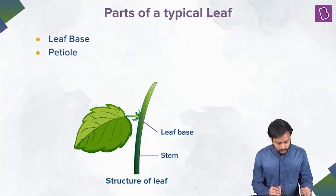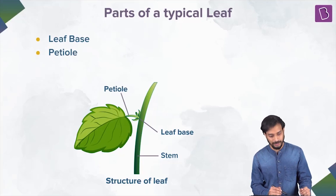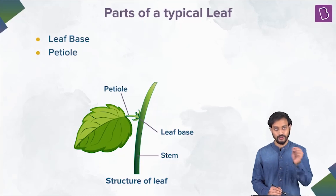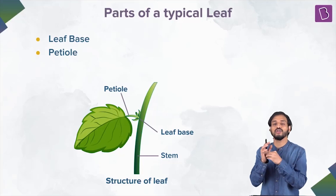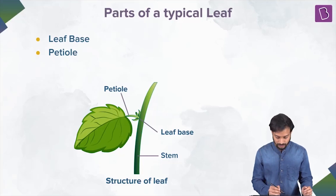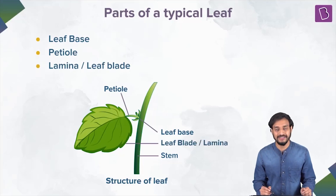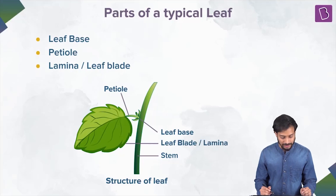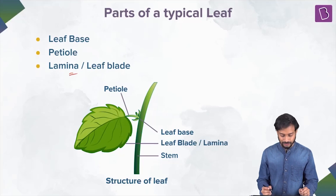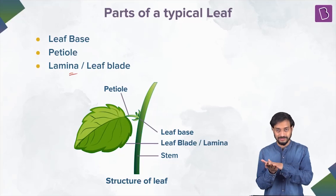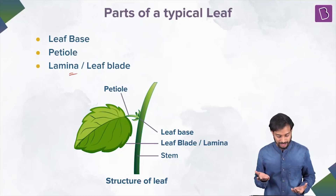It is attached to the stem with the help of this structure which is called the petiole. Petiole is a structure which holds the leaf, and it is the structure through which the leaf is attached to the stem. Now, very important — the lamina, also called the leaf blade. That structure is called the lamina. This whole leaf structure you're seeing — it's a lamina.